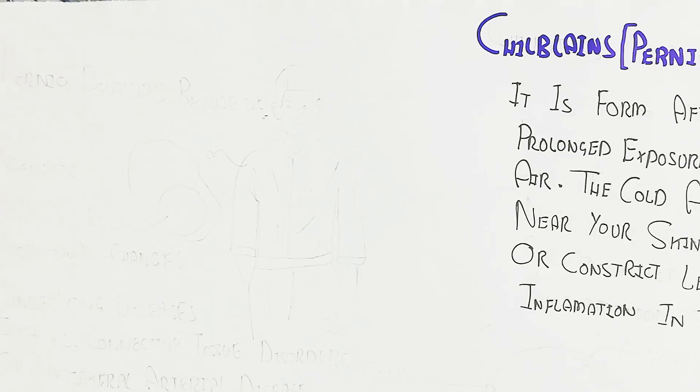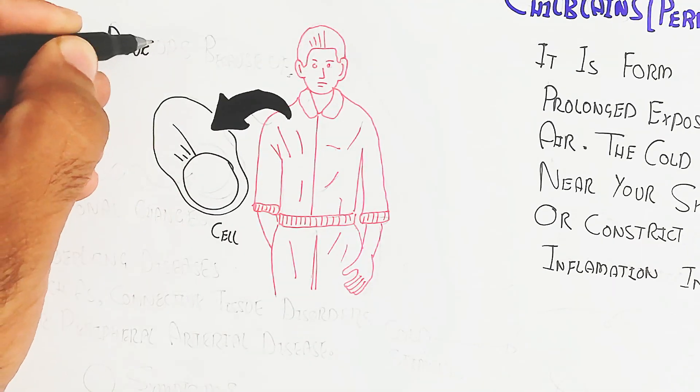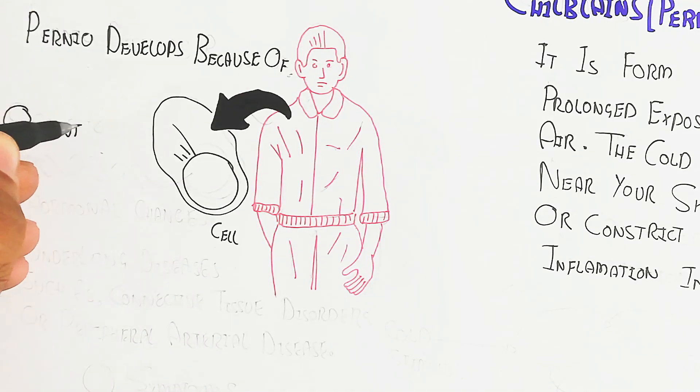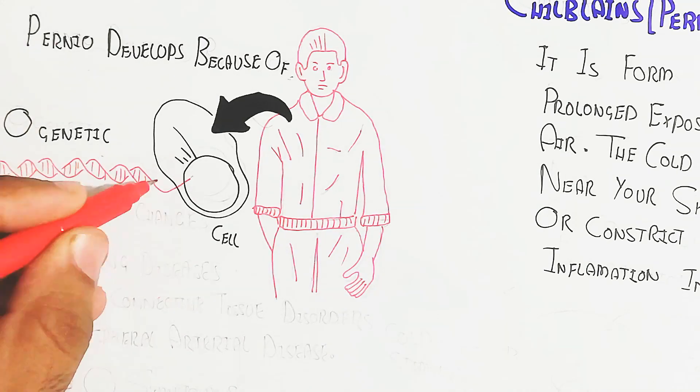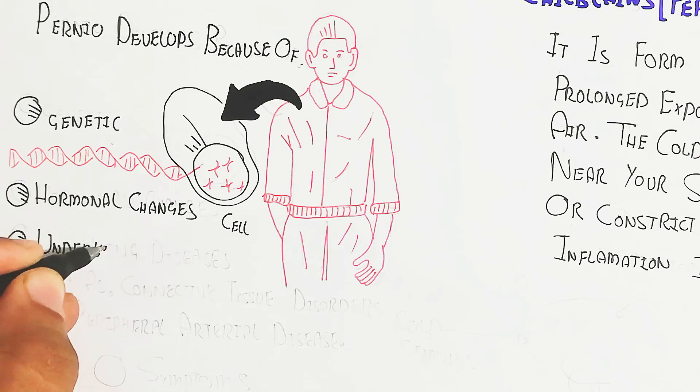So basically, Pernio develops because of genetics. The genetic is very important. Some people have it but some people not. That is why genetic variability is involved for Chilblains.